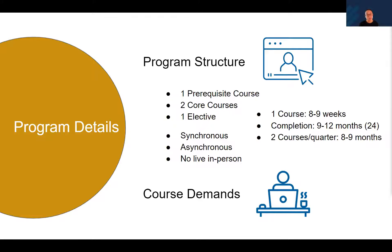We have two course types: a synchronous course, which is live instructor-led, and an asynchronous course, which is self-led. We currently don't offer live in-person courses, but we'll be reevaluating in the future. In terms of course length, each course is around eight to nine weeks depending on the content. Full program completion with consecutive courses is about nine to twelve months. If an employee does not take courses consecutively, it can take up to 24 months. There is an option to take two courses per quarter, which is a more intense load but finishes in around eight to nine months.